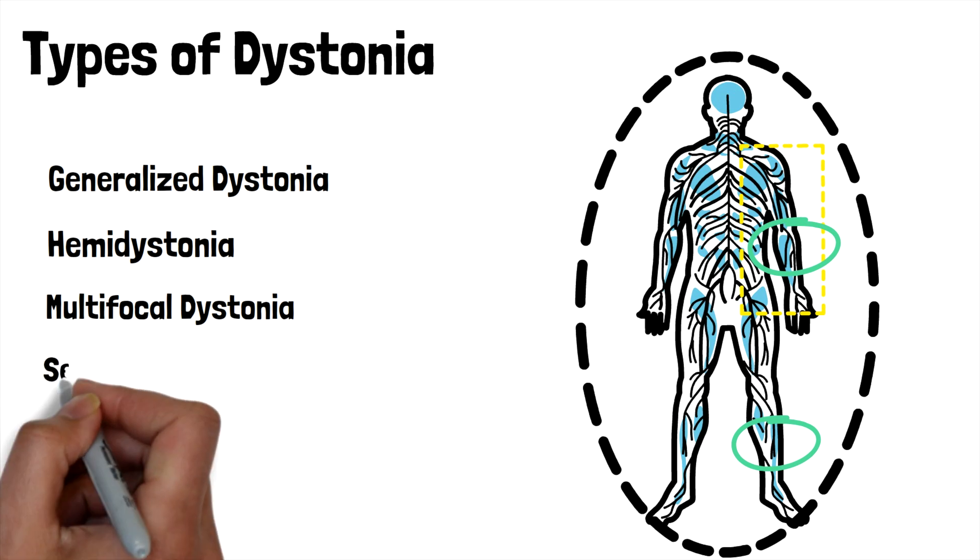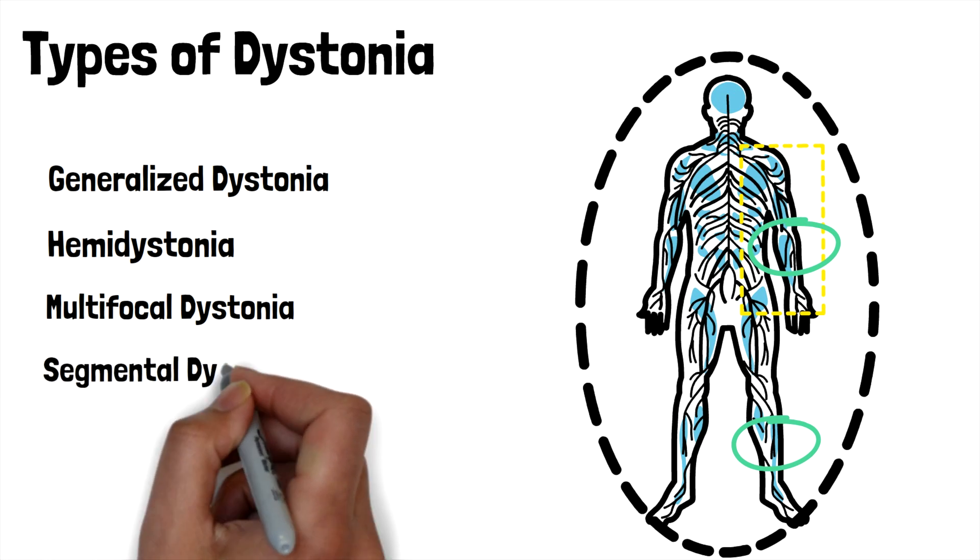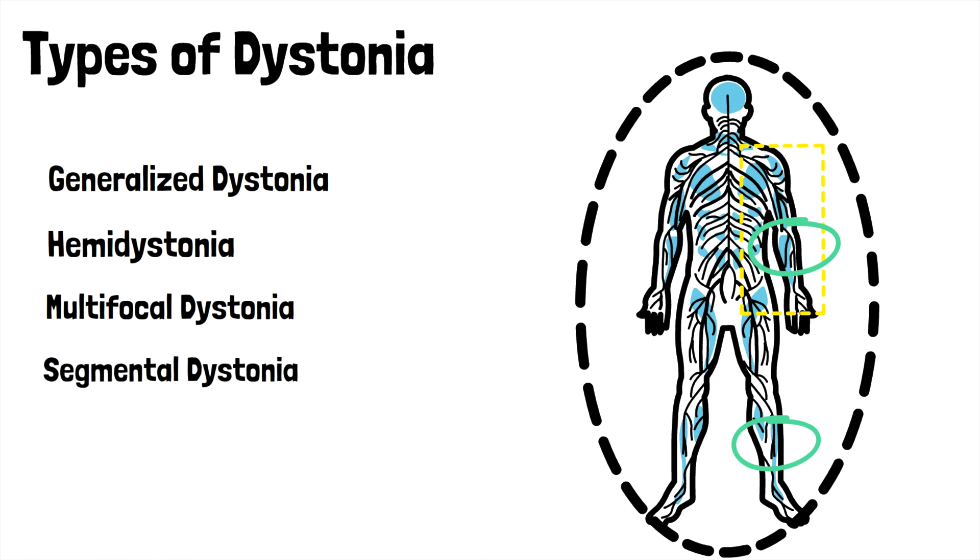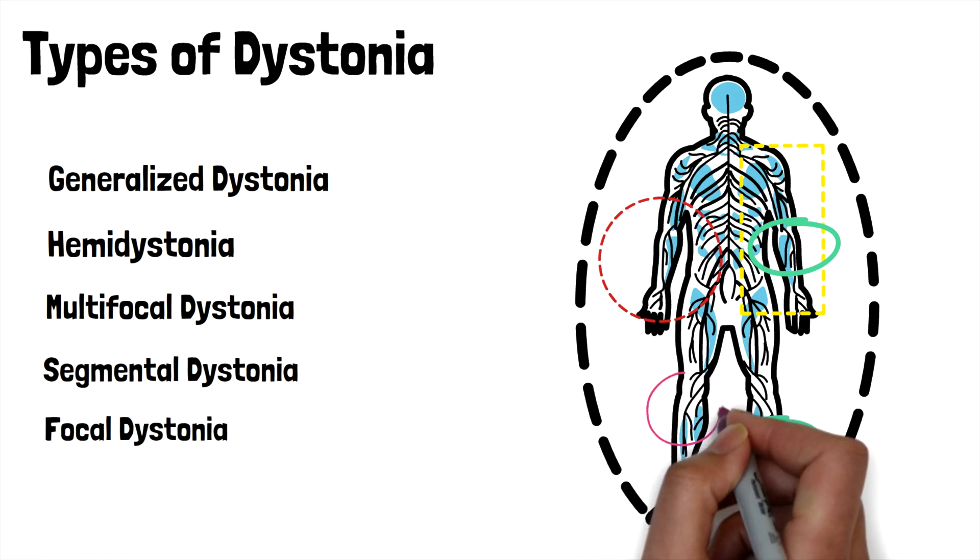The fourth type is segmental dystonia. This involves two or more adjacent body parts, such as an arm and a hand. And finally, we have focal dystonia. Here, the effects are localized to one body part, as seen in the video before.